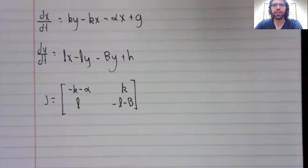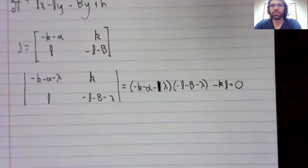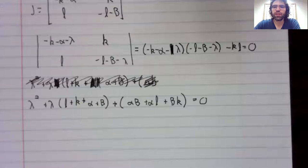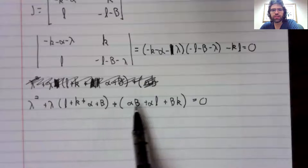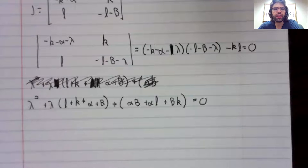Finding the eigenvalues is at least theoretically straightforward. You have to solve a quadratic. If we distribute everything out and combine like terms, we can apply the quadratic formula.